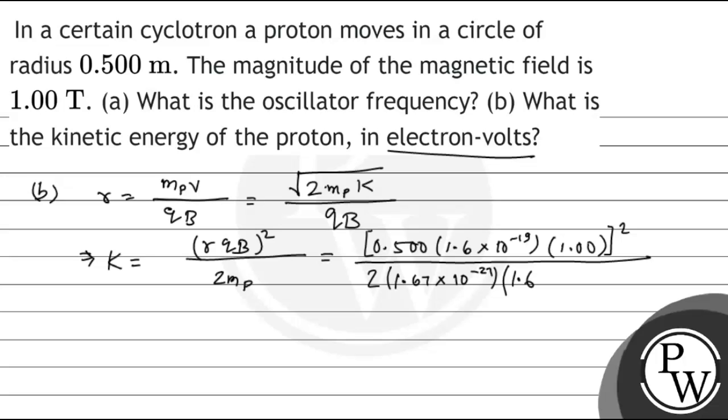Converting to electron-volts, the kinetic energy K equals 1.194×10^7 electron-volts. Hope you understood it, best of luck!